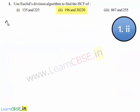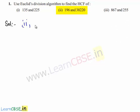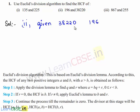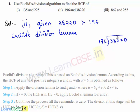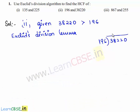Now let us move on to the second part. The given two numbers are 38,220 and 196. Clearly 38,220 is greater than 196, so we apply Euclid's division lemma for 38,220 and 196. We shall divide 38,220 by 196. 196 times 1 is 196, and the remainder is 186.